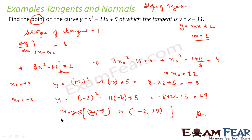Very simple. Here also we did the same thing — we found the slope of tangent. Once we had the slope of tangent, we equated it with dy/dx and found the value of x₀. Once we have x₀, we found the value of y₀.